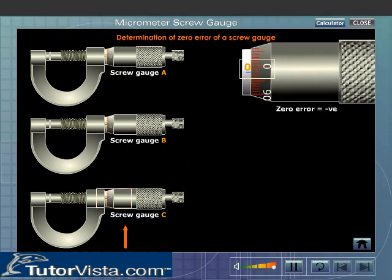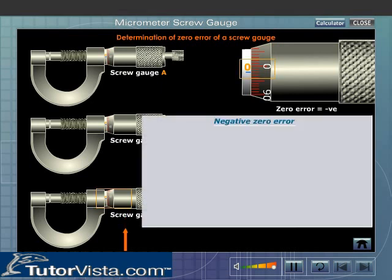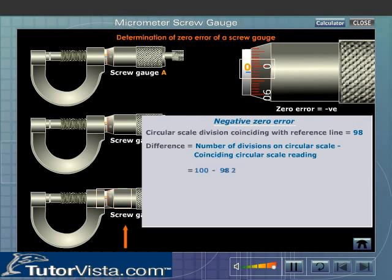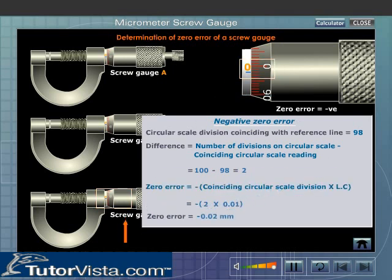In the case of the screw gauge C, the zero of the head scale is above the reference line of the main scale. This screw gauge is having a negative error. To calculate the negative zero error, note the division of the circular scale or head scale that coincides with the reference line. Subtract the coinciding division from the total number of divisions on the circular scale. To obtain the least count, multiply the difference by the least count and assign a negative sign to it.